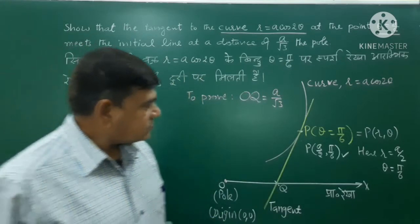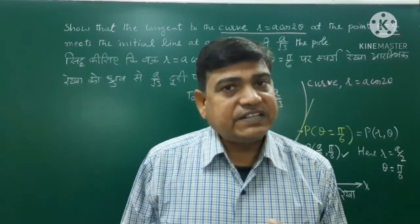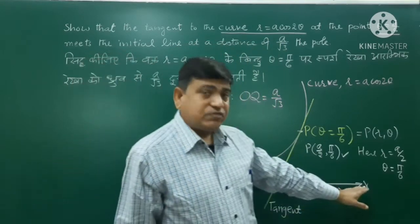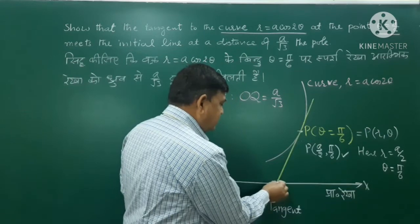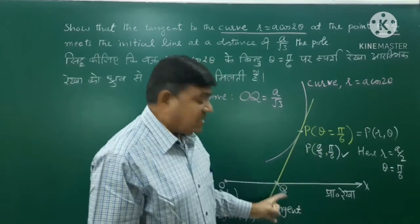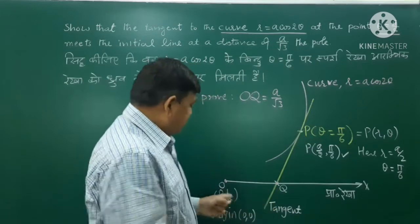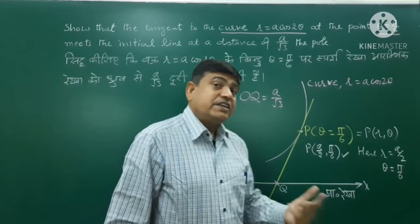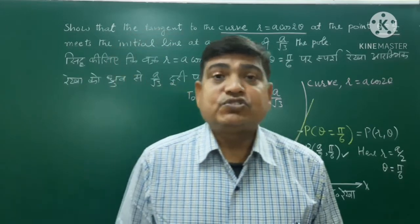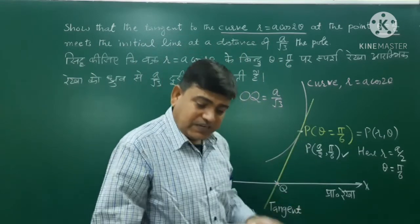To prove OQ = a/√3, we find the equation of tangent. We can find it in polar or Cartesian form. In Cartesian form, the initial line is the x-axis, and Q lies on it with y-coordinate 0. We use the one-point formula: y − y₁ = m·(x − x₁), where m = dy/dx is the slope.